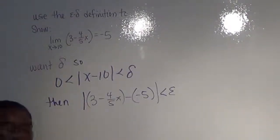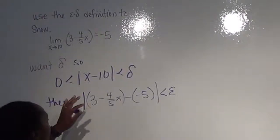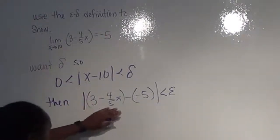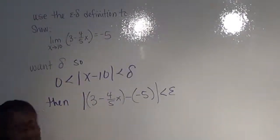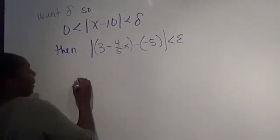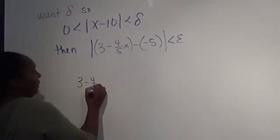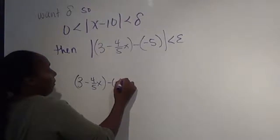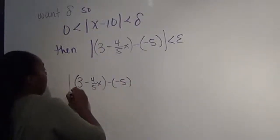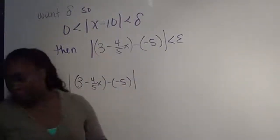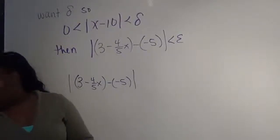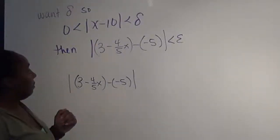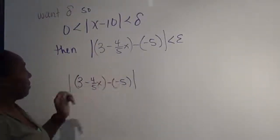So to find our delta, we're going to start with the fact that we have this expression here. So if we look at this, I'm going to look at |3 - 4/5 x - (-5)|. This is an absolute value. We can simplify, because basically we have some numbers here, so we can just simplify this.